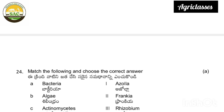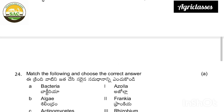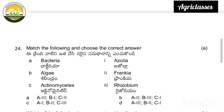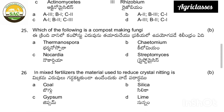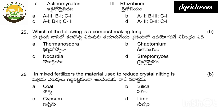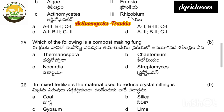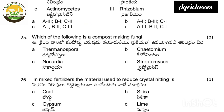Next, question 24: match the following — bacteria, algae, actinomycetes, azolla, frankia, rhizobium. Here, bacteria matches with rhizobium. Azolla is associated with a fungus, and actinomycetes matches with frankia.